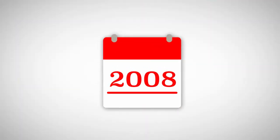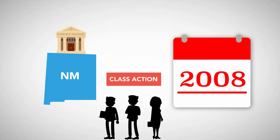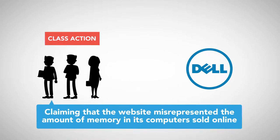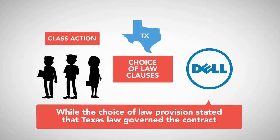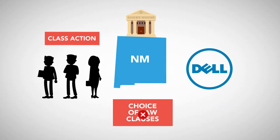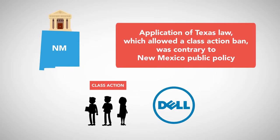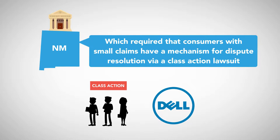In 2008, the New Mexico Supreme Court considered a class action lawsuit brought by consumers against the computer manufacturer Dell, claiming that the website misrepresented the amount of memory in its computers sold online. While the choice of law provision stated that Texas law governed the contract, the New Mexico Supreme Court refused to uphold the provision. Application of Texas law, which allowed a class action ban, was contrary to New Mexico public policy, which required that consumers with small claims have a mechanism for dispute resolution via a class action lawsuit.